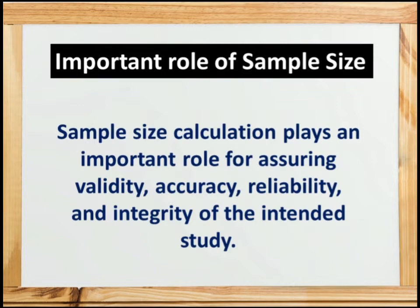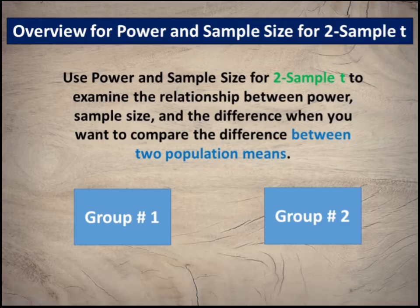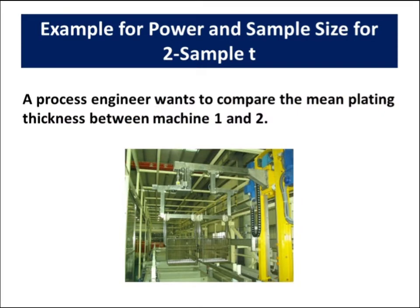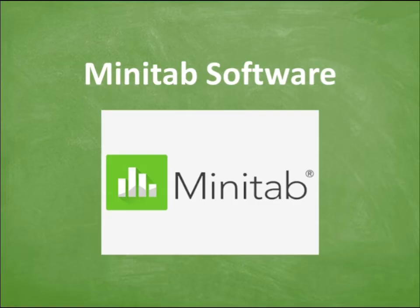Use power and sample size for two sample t to examine the relationship between power, sample size, and the difference when you want to compare the difference between two population means. For example, a process engineer wants to compare the mean plating thickness between machine 1 and 2. We will learn how to calculate sample size for two sample t-test using Minitab software.